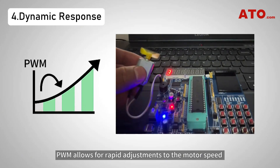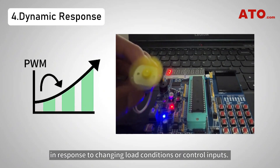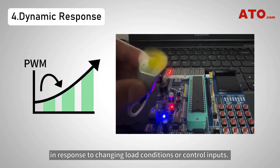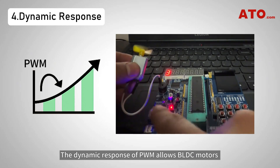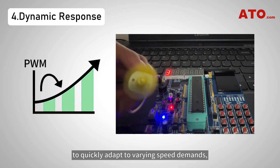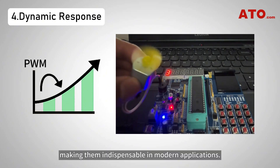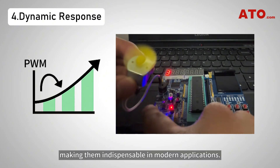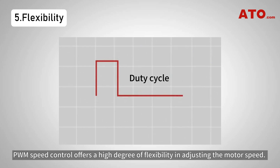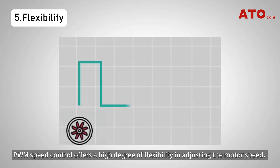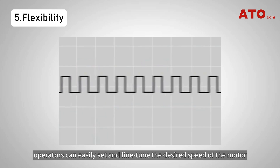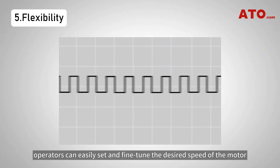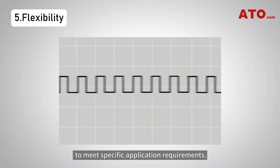PWM allows for rapid adjustments to the motor speed in response to changing load conditions or control inputs. The dynamic response of PWM allows BLDC motors to quickly adapt to varying speed demands, making them indispensable in modern applications. PWM speed control also offers a high degree of flexibility; by changing the duty cycle of the PWM signal, operators can easily set and fine-tune the desired speed of the motor to meet specific application requirements.